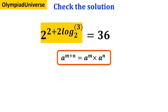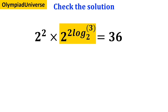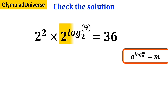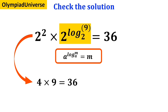According to the rules of exponents, a to the power of m plus n is equal to a to the power of m times a to the power of n. So we write this as 2 squared times 2 to the power of 2 times log of 3 with base 2, which equals 36. We slightly rewrite the highlighted expression as 2 squared times 2 to the power of log of 9 with base 2, which equals 36. And according to the rules of logarithm, a to the power of log of m with base a is equal to m. So this simplifies to 4 times 9 which is equal to 36 — we have successfully proven that 36 equals 36.